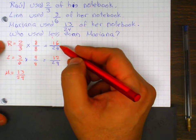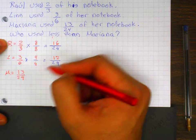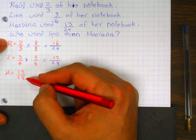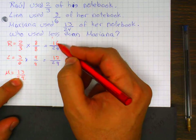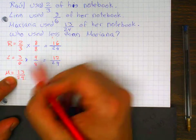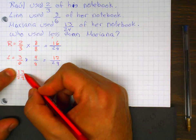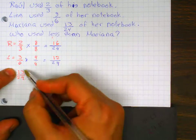So now if you notice, now I have all my fractions with the same denominator. So the only thing that I need to do now is look at the numerator and see, in this case, who did less than Mariana. Mariana did thirteen twenty-fourths.